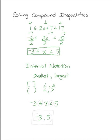So we write negative 3 comma 5. You will notice that negative 3 is less than or equal to x, which means it can be negative 3. We are including this value, so we will use a bracket next to the negative 3.